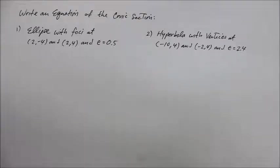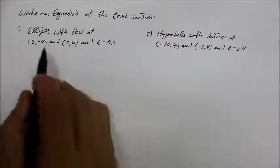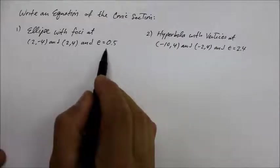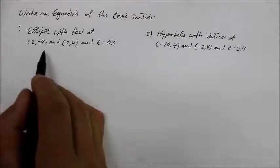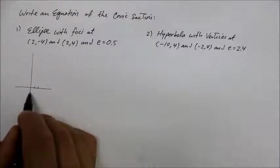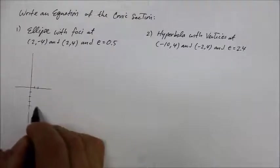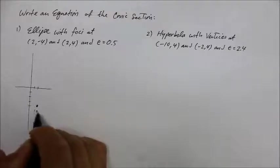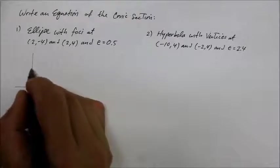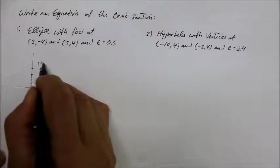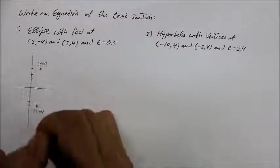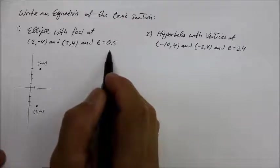So number one, here's what we have. It says it's an ellipse. If it's an ellipse, we're looking for an eccentricity between zero and one, and there it is. First let me graph this. The coordinate for one of the foci is (2, -4), and the other one is (2, 4). The vertex is on the outside of that, and the eccentricity is 0.5.